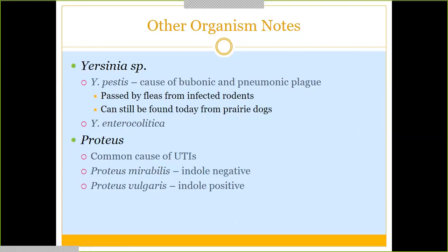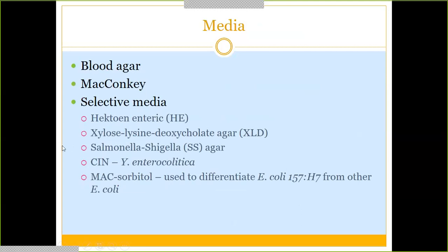Proteus is very commonly seen with UTIs — E. coli is the number one cause, but Proteus is also frequently seen with urinary tract infections. It has two main species: Proteus mirabilis and Proteus vulgaris. They can be differentiated by indole results — Proteus mirabilis is indole negative and Proteus vulgaris is indole positive. Proteus has a very unique appearance on agar that we'll look at shortly.